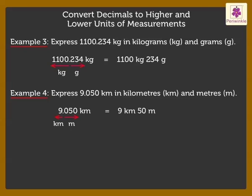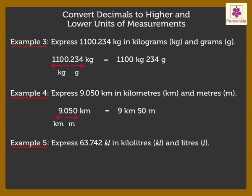Let us solve one last example. Express 63.742 kiloliters in kiloliters and liters. Here, 63 forms the integral part and 742 the decimal part. Therefore, we get the answer as 63 kiloliters, 742 liters.